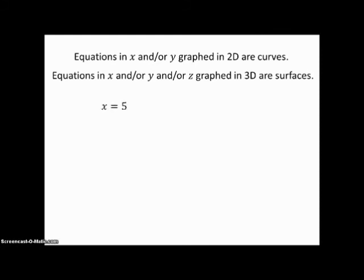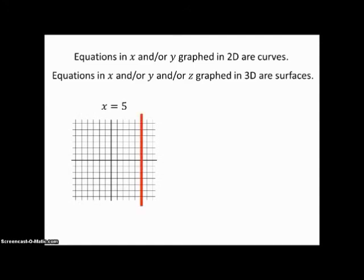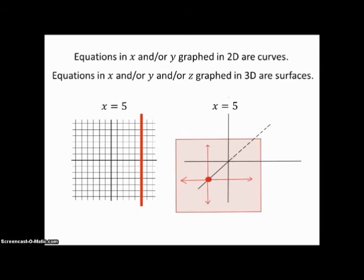For example, if x equals 5 in two dimensions, we get a vertical line, because y can take on any value. Now in three dimensions, that same equation starts with a point on the x-axis at five, but y and z don't have to be zero — they can be anything. So if we extend perpendicular lines parallel to the z-axis and the y-axis and fill that in, we see that in three dimensions this is the equation of a plane parallel to the yz-plane, out five units along the x-axis.